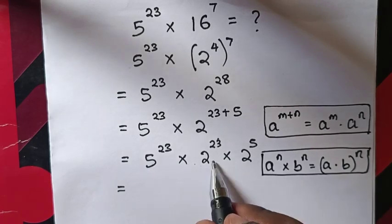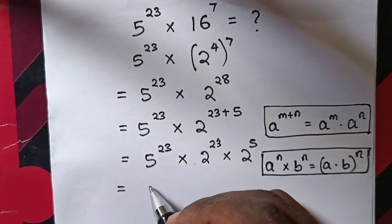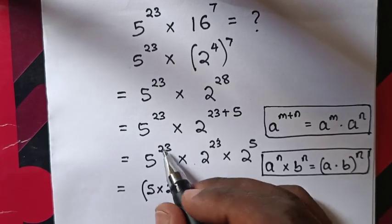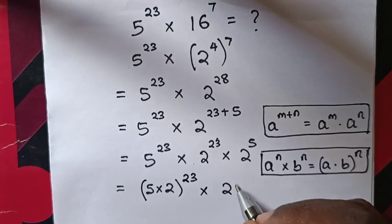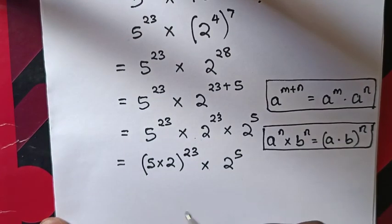So this equals (5 times 2)^23 times 2^5, which equals 10^23 times 32.